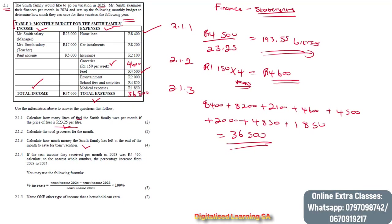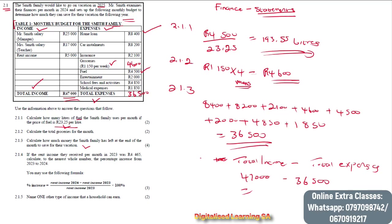Their total income is R47,000. So we take total income minus total expenses: 47,000 minus 36,500. The amount they can save after paying all their expenses is R10,500.